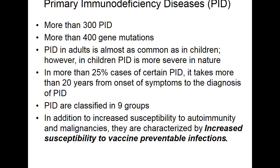Primary immunodeficiency is, if not more, at least as common in adults as in children. In children, the majority of these diseases are monogenic — they have a single gene defect — and often they are much more serious; at times they are immunological emergencies that must be treated quickly, otherwise the patient will succumb. In adults, certain immune deficiencies may take as much as 20 years from symptom onset to diagnosis, which emphasizes the need for more awareness and education in primary immunodeficiency.